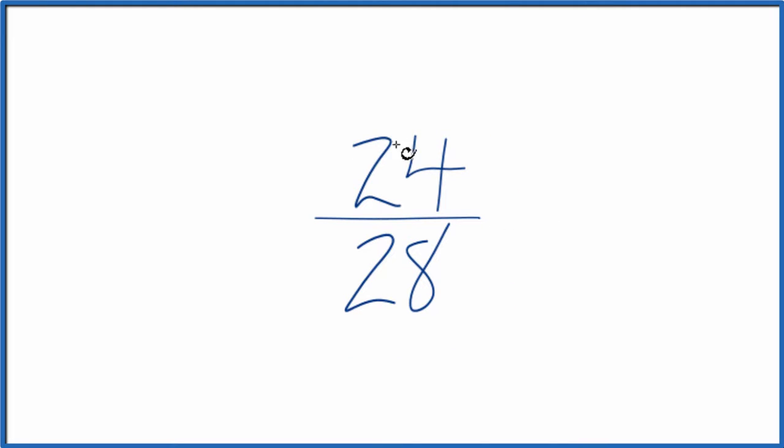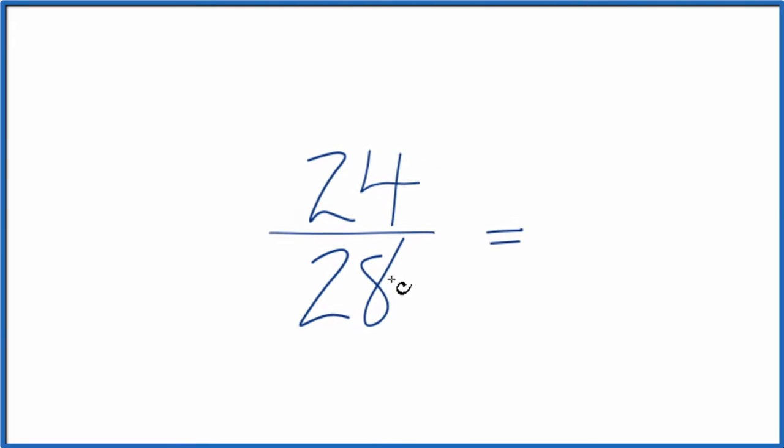We want to find another fraction that's equivalent to 24 divided by 28. It has the same numerator and denominator, it's just simplified to lowest terms, and it also will have the same value. To do that, we need to find a common factor, something that goes into 24 and 28 evenly.